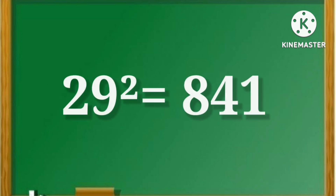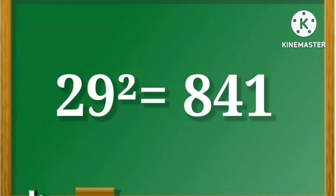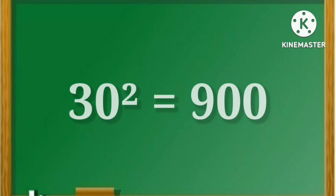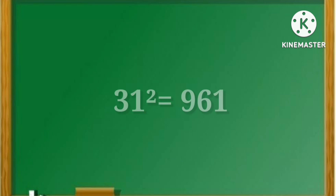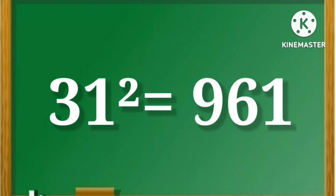29 square is equal to 841. 30 square is equal to 900. 31 square is equal to 961.